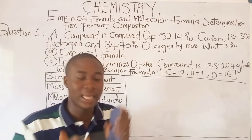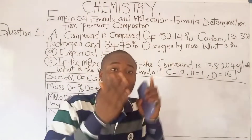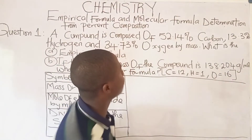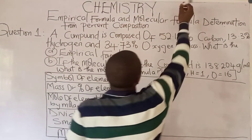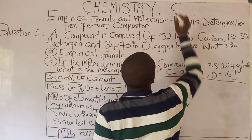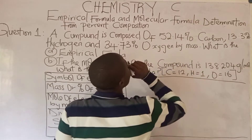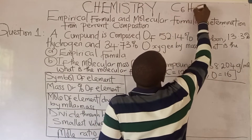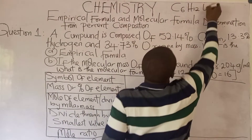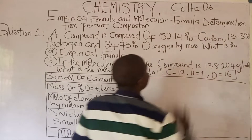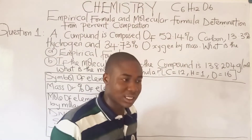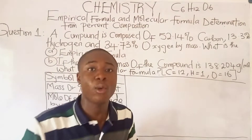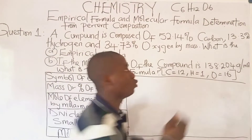Empirical formula is the simplest formula a compound can have. For example, we have glucose, and glucose is basically C6H12O6. This is the molecular formula of glucose.